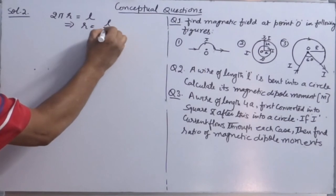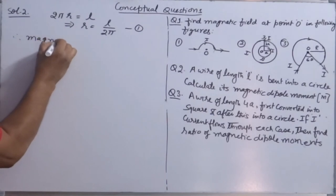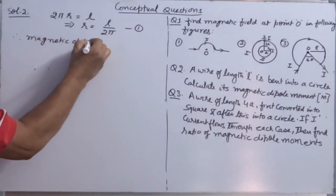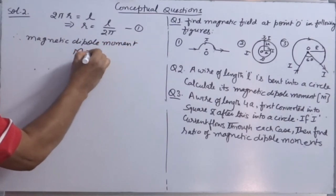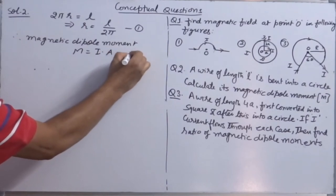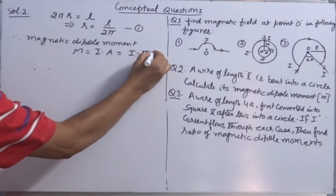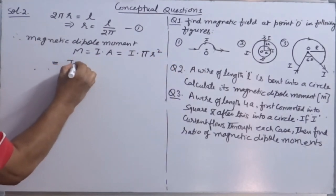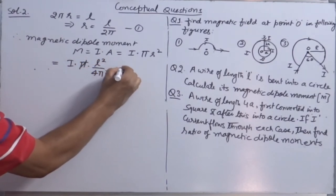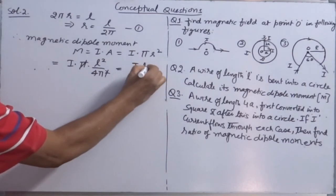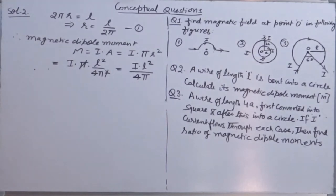Radius of the coil will be L/2π. Therefore, magnetic dipole moment M = IA = I × πR² = I × π × L²/4π² = IL²/4π. That's it.